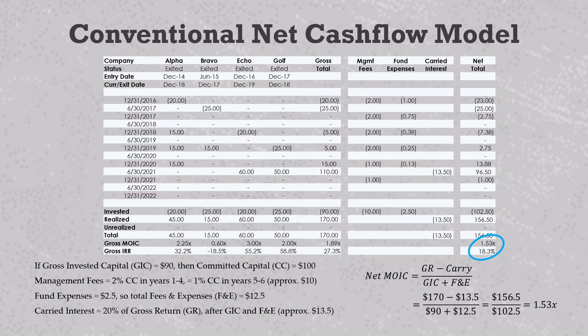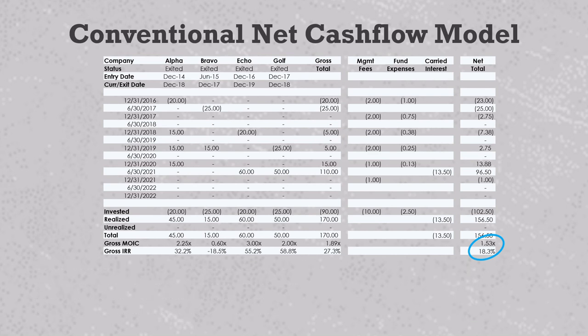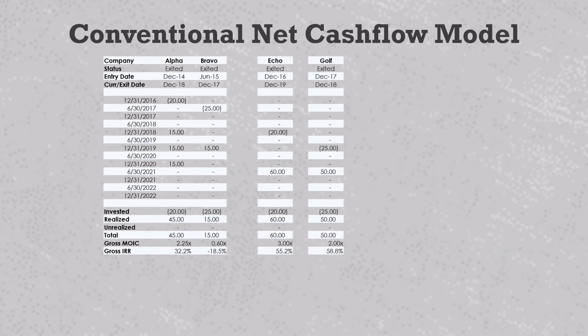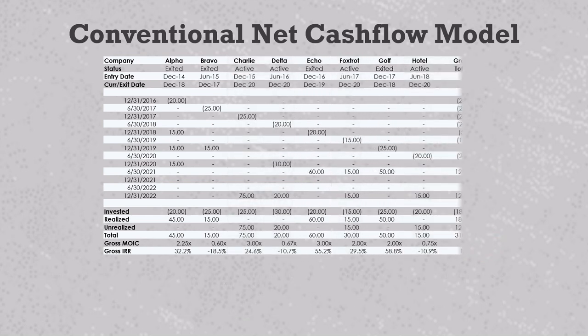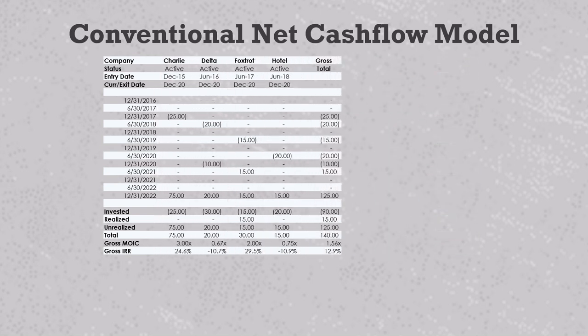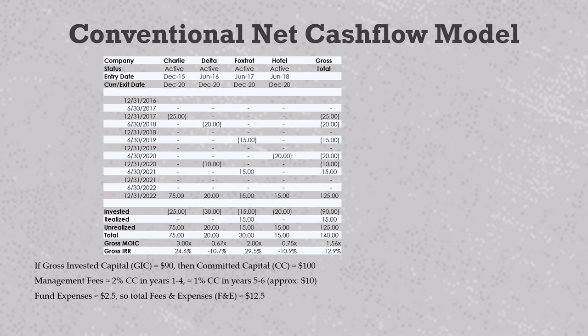Great, but let us not forget the footnote we'll need to explain our methodology. Now back to the total portfolio so we can do the same for the active deals. First, we remove the four exits. The remaining four active deals have $90 million of gross invested capital, so again let's call it a $100 million fund. That means we can make the fees and expenses exactly the same as in the exited portfolio.